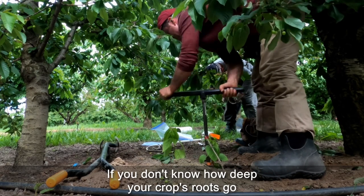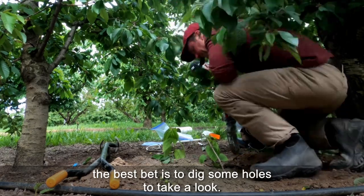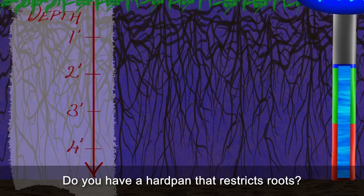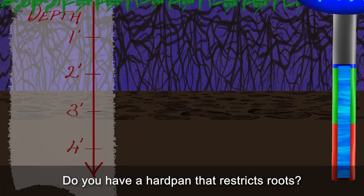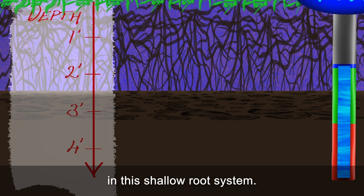If you don't know how deep your crop's roots go, the best bet is to dig some holes to take a look. Do you have a hardpan that restricts roots? Then you'll have to irrigate to match the limited water storage in this shallow root system.